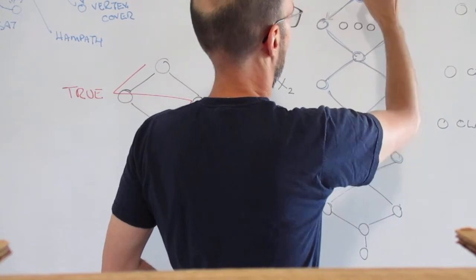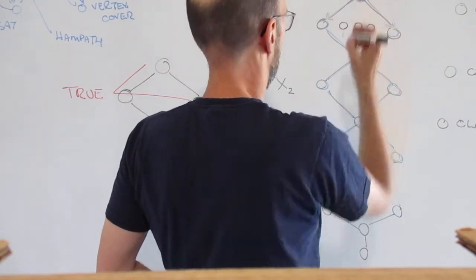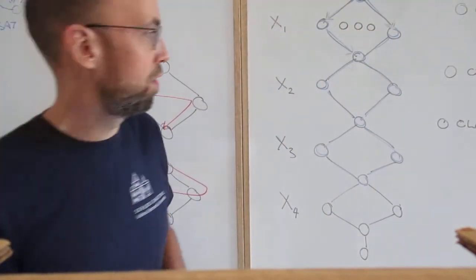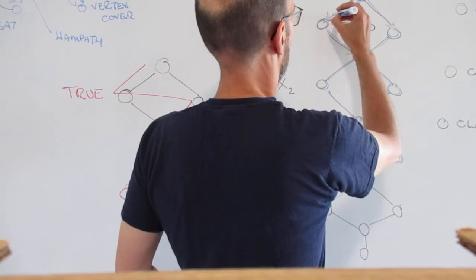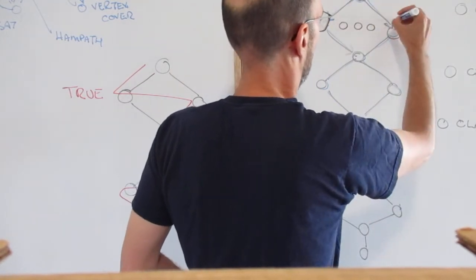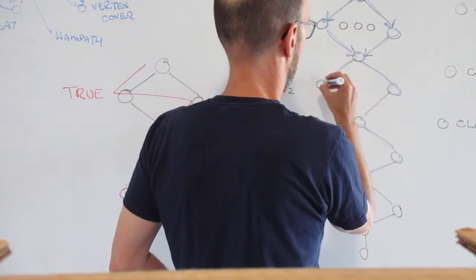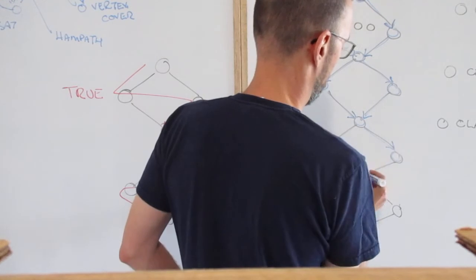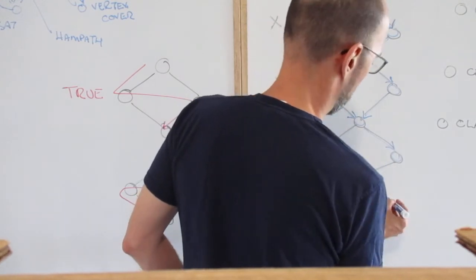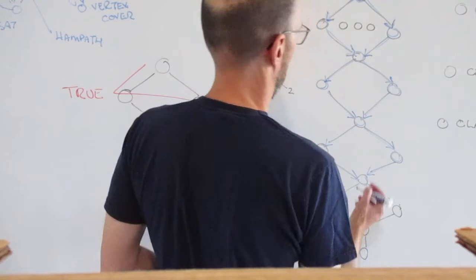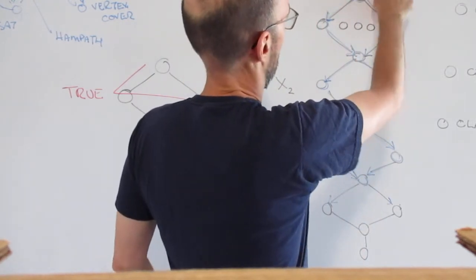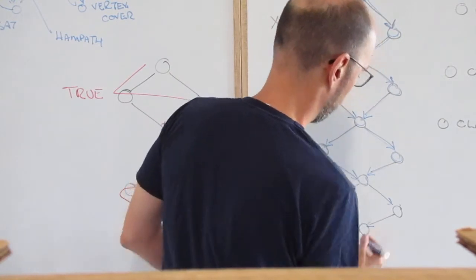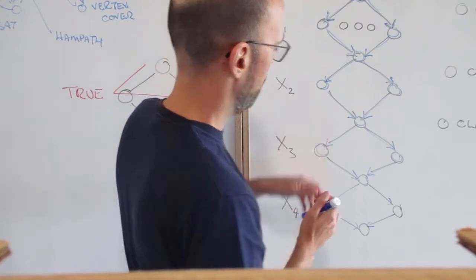So you have to start at S — my marker died at a really inconvenient time. This is why blackboards are better. If it's directed, then it's easier. And if it's undirected, you can still do it, but I forget how. If it's directed, you don't actually need these extra vertices, because I can insist it has to start here and end here.